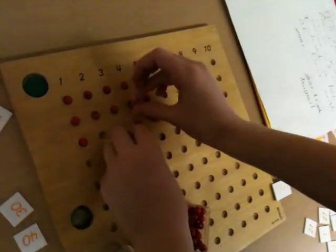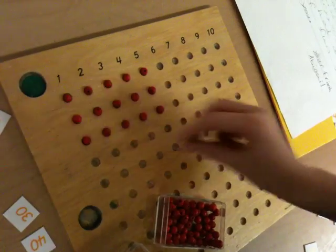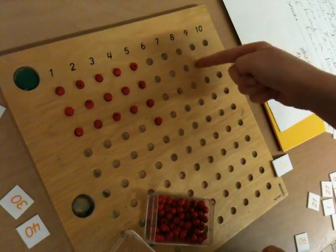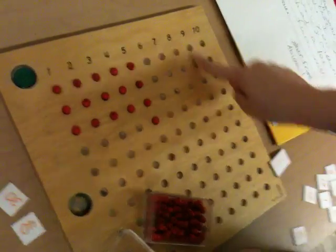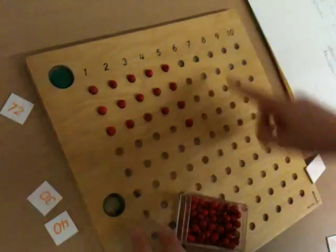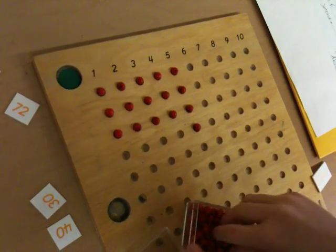So if I had nine multiplied three times, I would go to the nine, and then I would go one, two, three. I'd do three beads in every row. I would do three, three, three, and all the way down there.